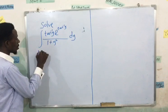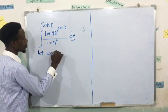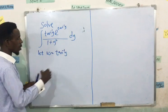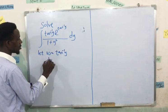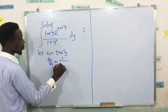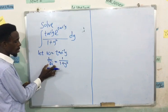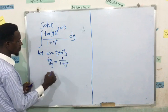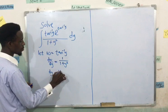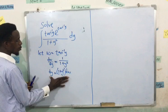So to approach a question like this I'm going to say let w equals the tan inverse of y. So if I'm differentiating this I'll have dw/dy is going to give me 1 over 1 plus y squared. So I'll make my dy subject to the formula, so my dy now is going to be 1 plus y squared dw.